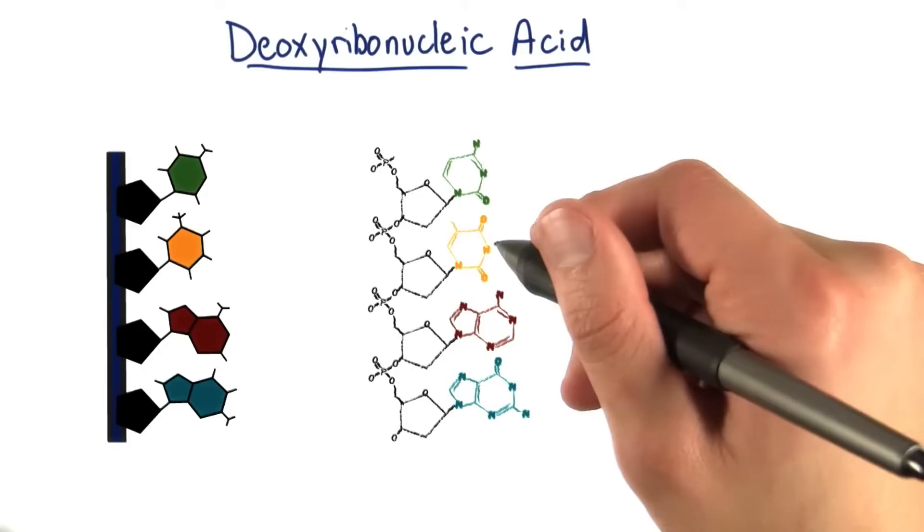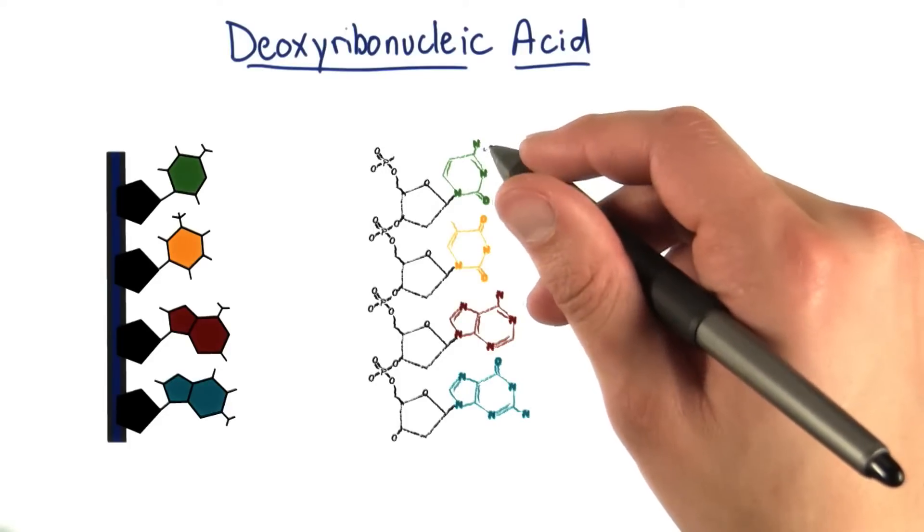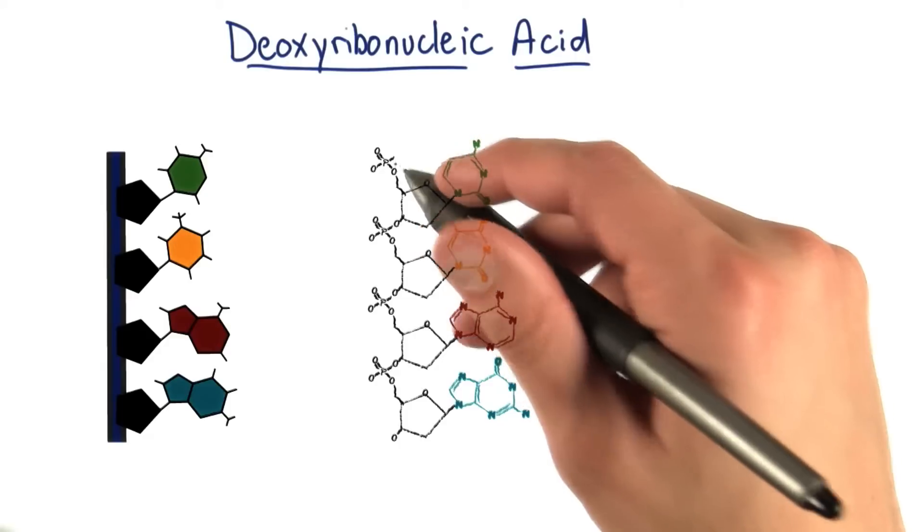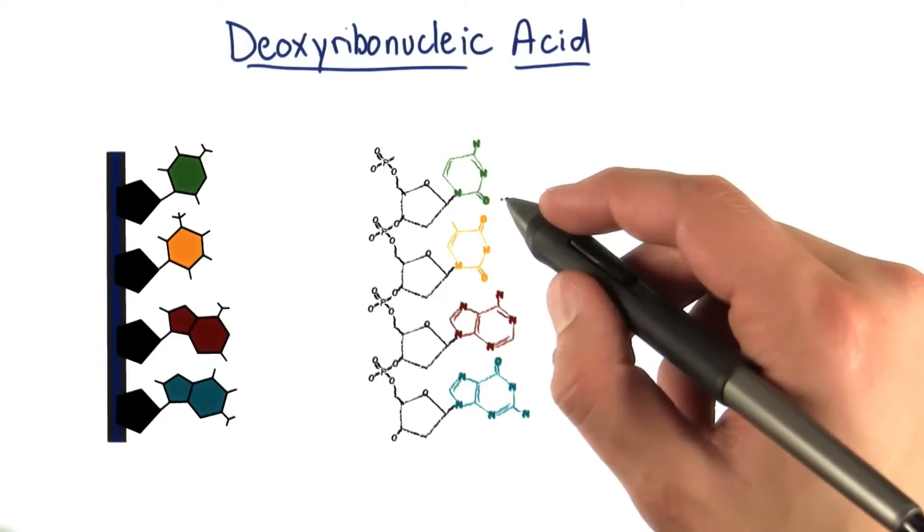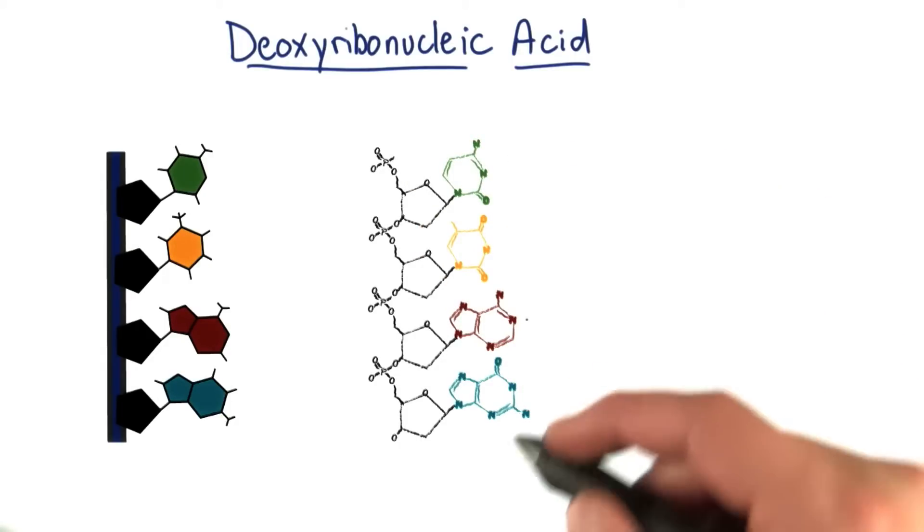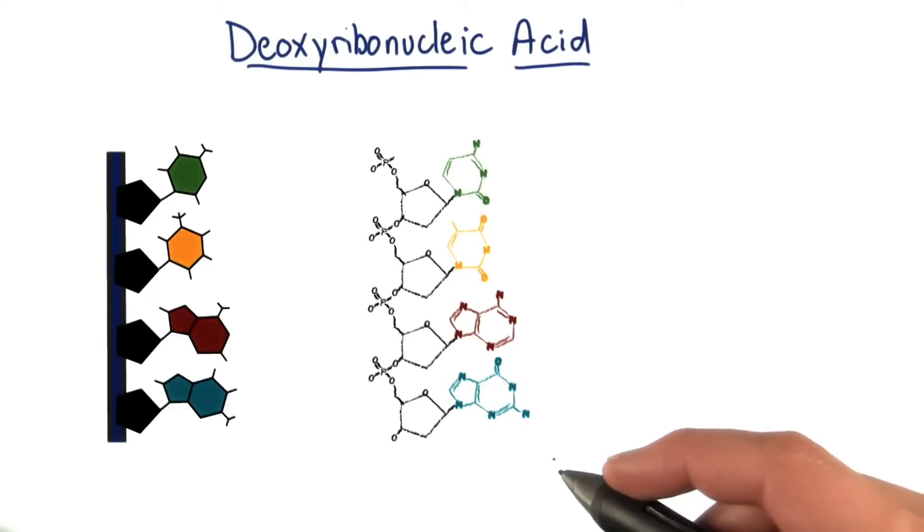Where you can see each position, there's an atom: nitrogen, oxygen, phosphorus. These are elements from the periodic table. This is chemistry that makes up our biology of who we are.